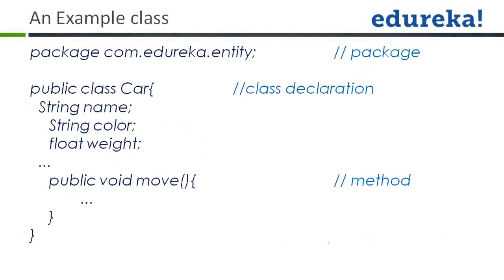Here is an example class. The package is com.adureka.entry, and in it we have a class called Car. The Car class has three variables: String name, String color, and float weight. You can also have methods within your class, like public void move. This method is not returning anything — its return type is void — and it is not taking any parameters or providing a definition.